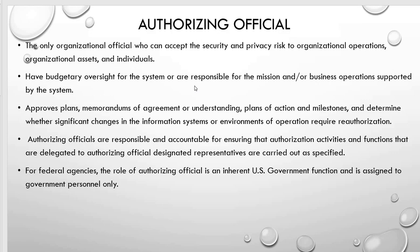Authorizing Official. Who is an authorizing official? This is the organizational official who can accept security and privacy risk to organizational operations, organizational assets, and individuals. The authorizing official has budgetary oversight for the system or is responsible for the mission or business operations supported by the system. The authorizing official approves plans, memoranda of agreement or understanding, plan of action and milestones, and determines whether significant changes in the information system or environment of operation require reauthorization.